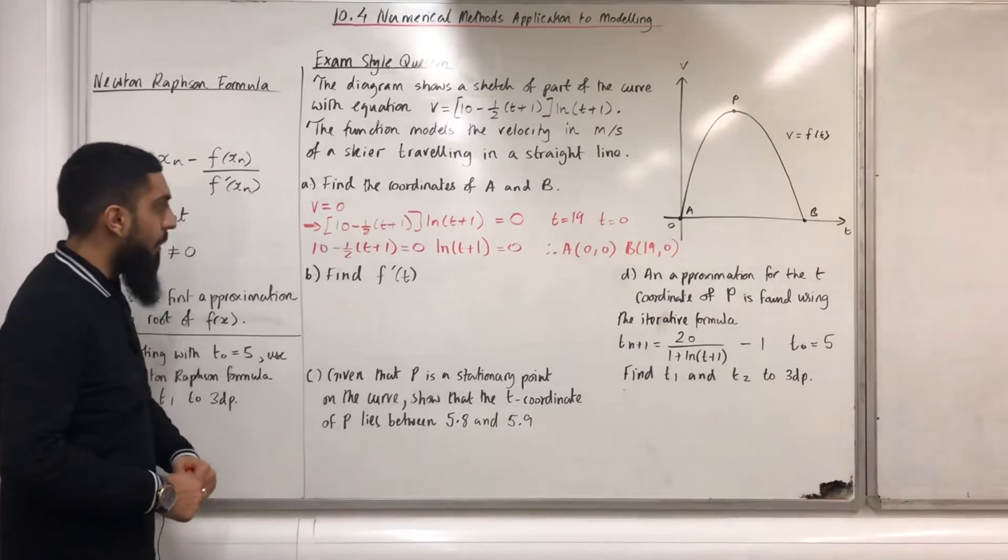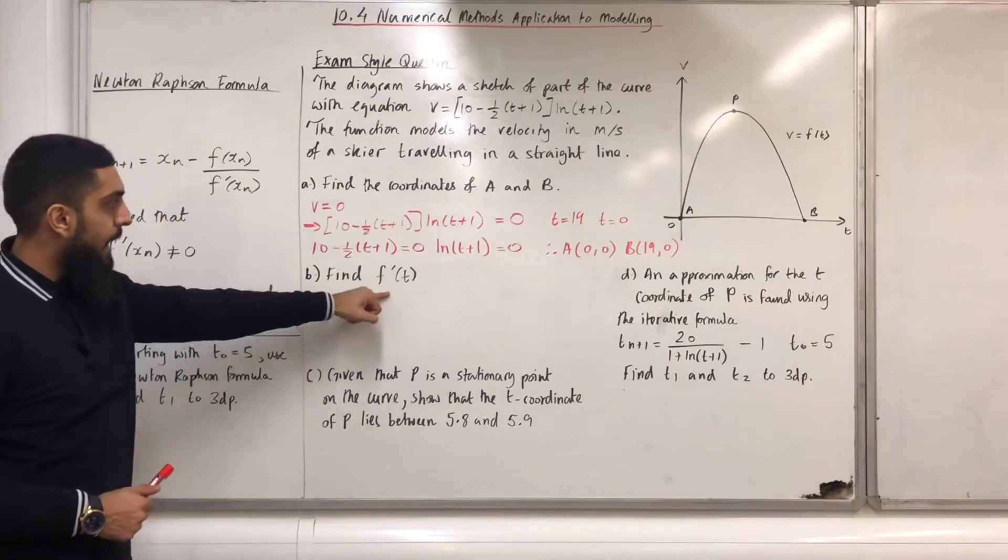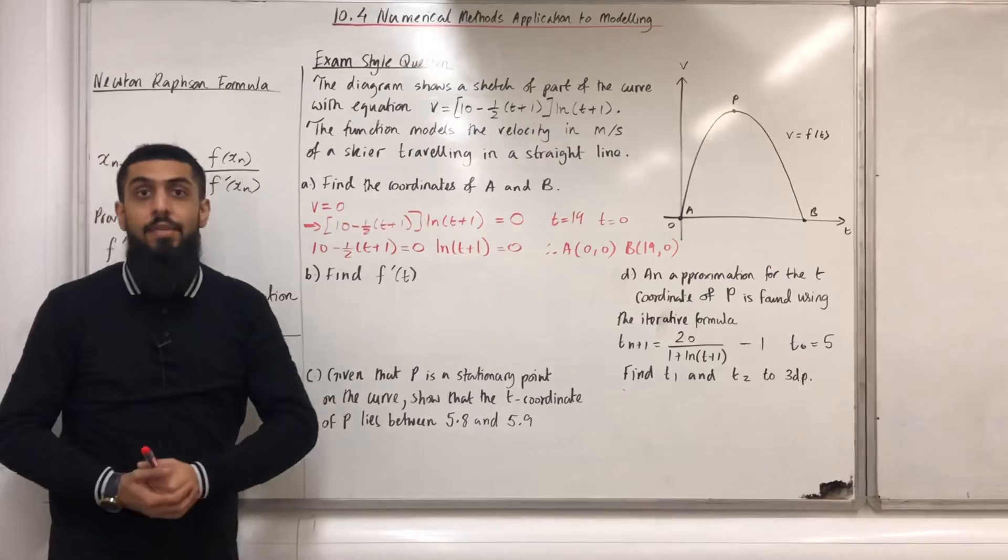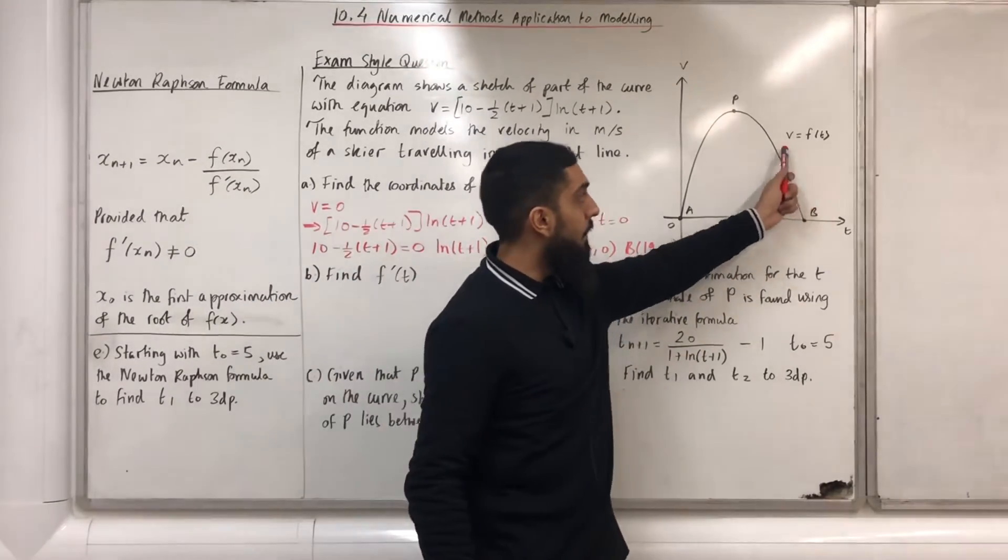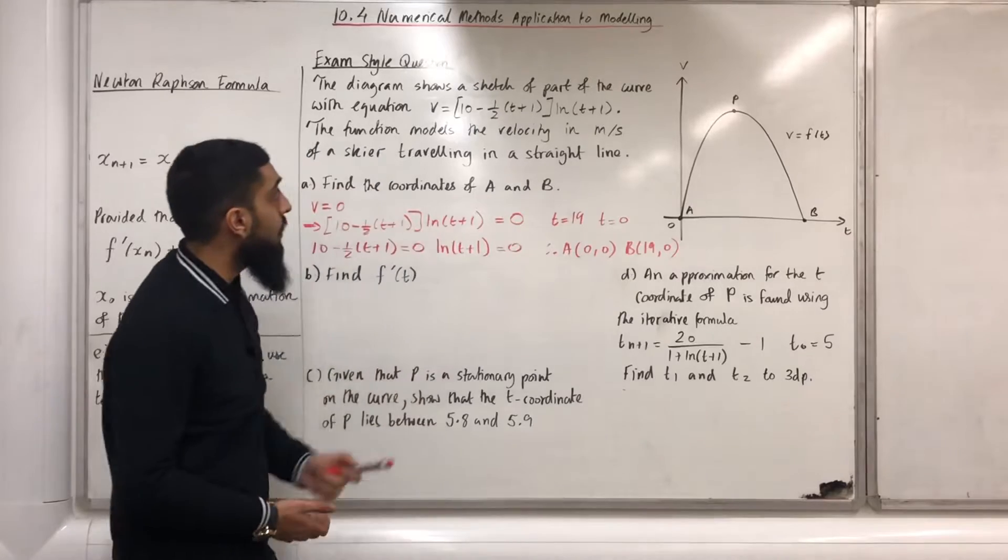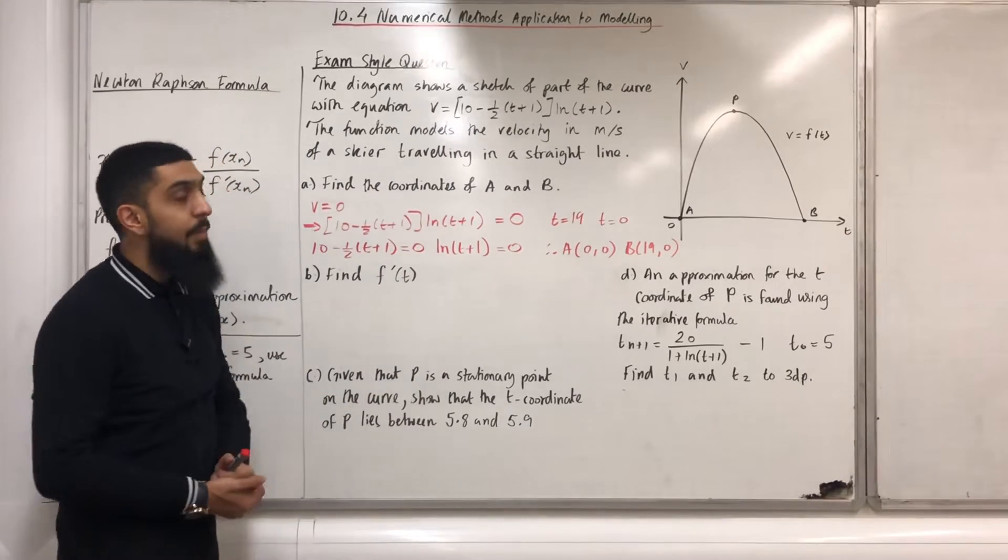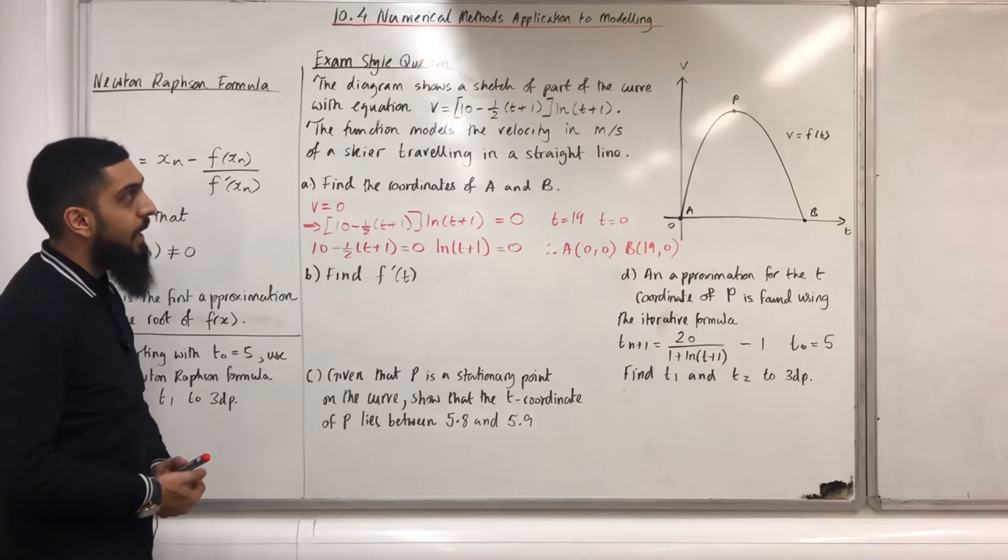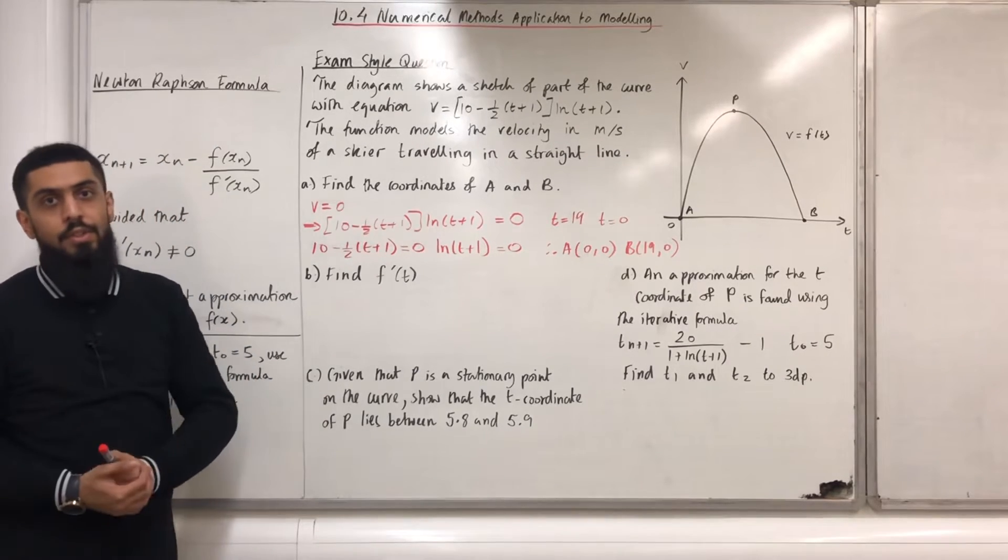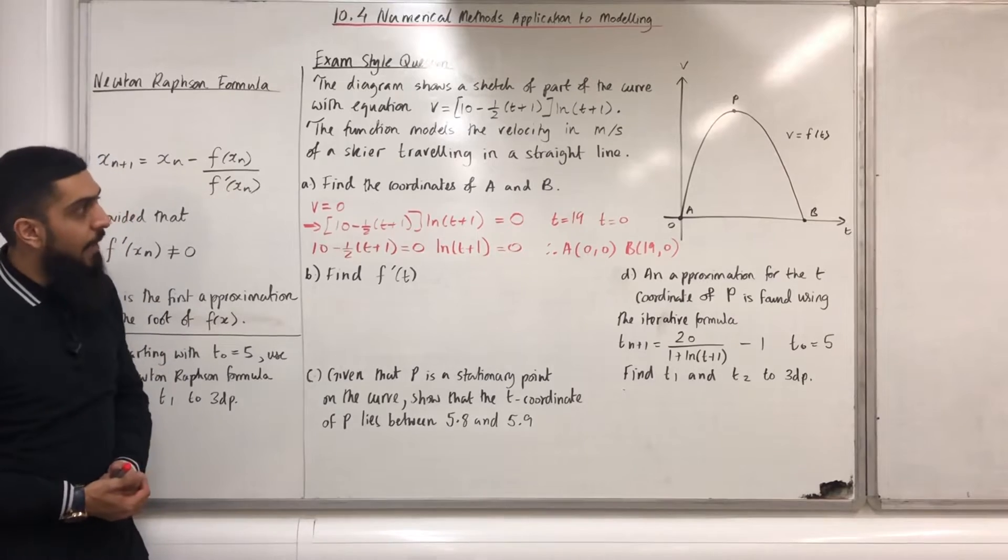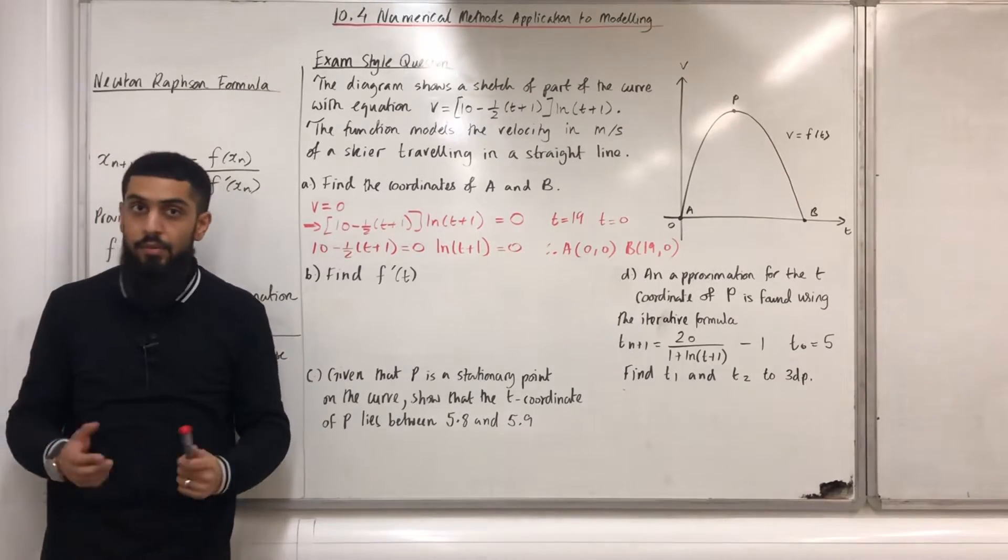Let's have a look at part B. Find f'(t). So we have to differentiate f(t). f(t) represents v. And we know v = [10 - 0.5(t+1)]ln(t+1). We have a product of two functions. So to differentiate f(t), we need to use the product rule.